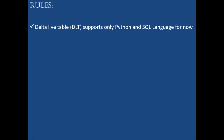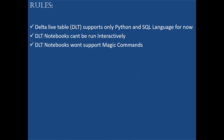The first rule is Delta Live Tables supports only Python and SQL language for now. You can use only Python notebooks or SQL notebooks to implement Delta Live Table pipelines. The second thing is these DLT notebooks can't be run interactively — meaning normally when you write Python or SQL code you run cell by cell and see each result. You cannot run them that way; they should be run all at once through the Delta Live Table workflows.